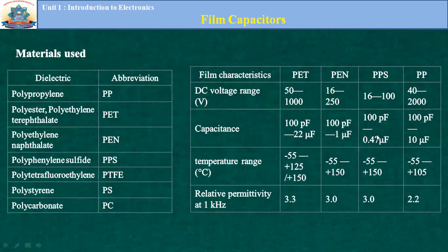PPS can be used for lower signals, while PP can be used for moderate to high signals. PPS is used for very small, high frequency signals; PP is for high frequency; PEN for high frequency; and PET for intermediate frequency. Temperature range: PET operates from minus 55°C to 125°C; PEN from minus 55°C to 150°C; and PP from minus 55°C to 105°C. These are important specifications for film capacitors.